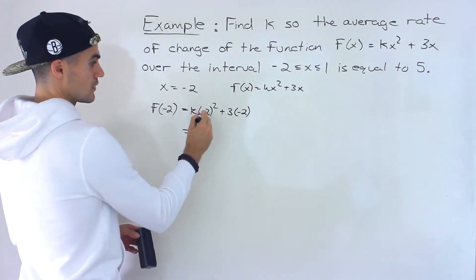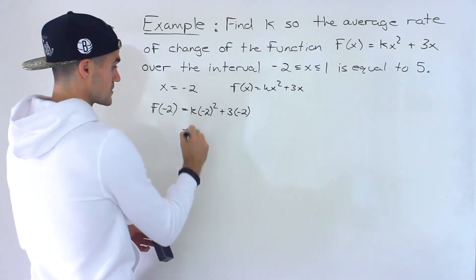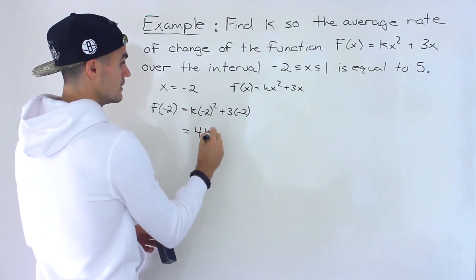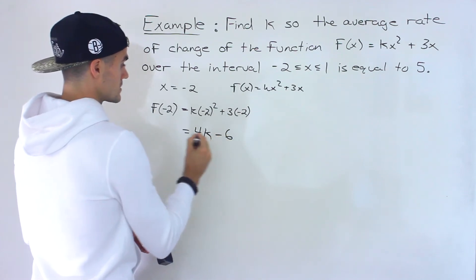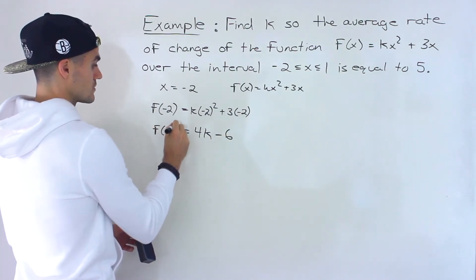This would end up being 4 over here. Negative 2 to the power of 2 is 4 times k, so we'll have 4k, and then this would be minus 6. So this is f(negative 2).